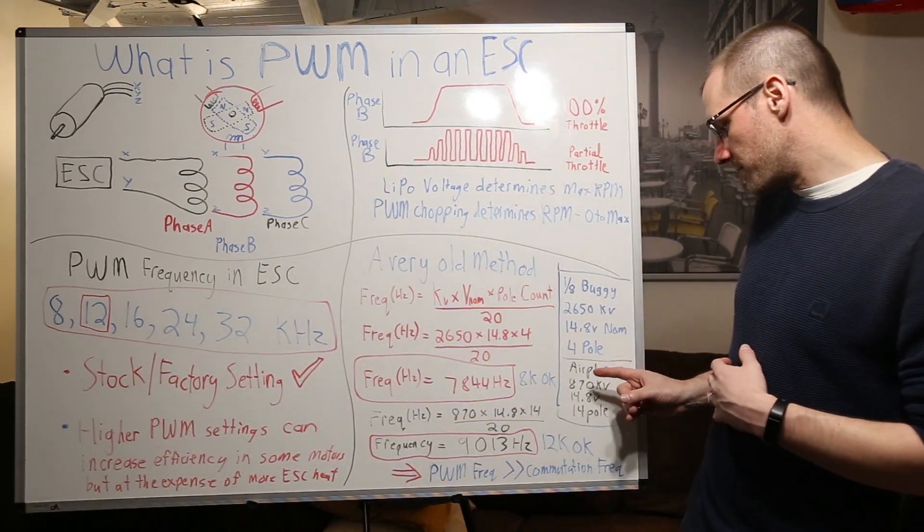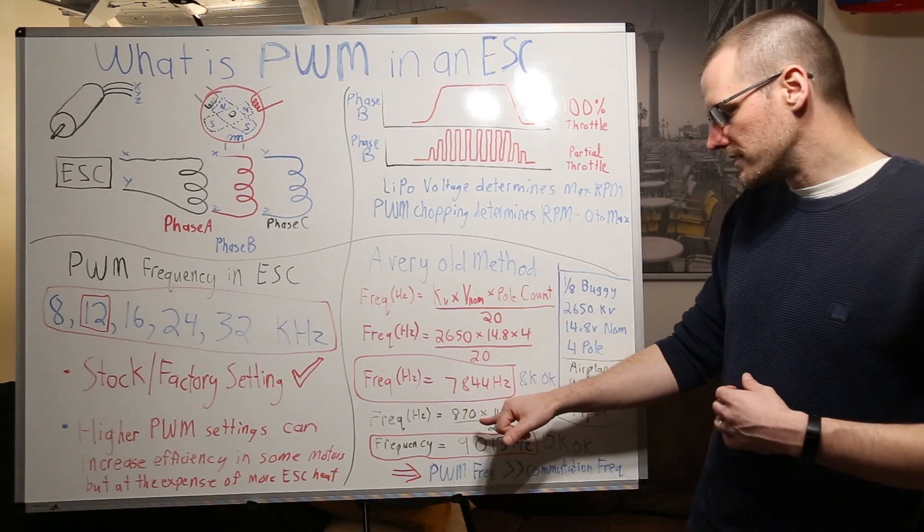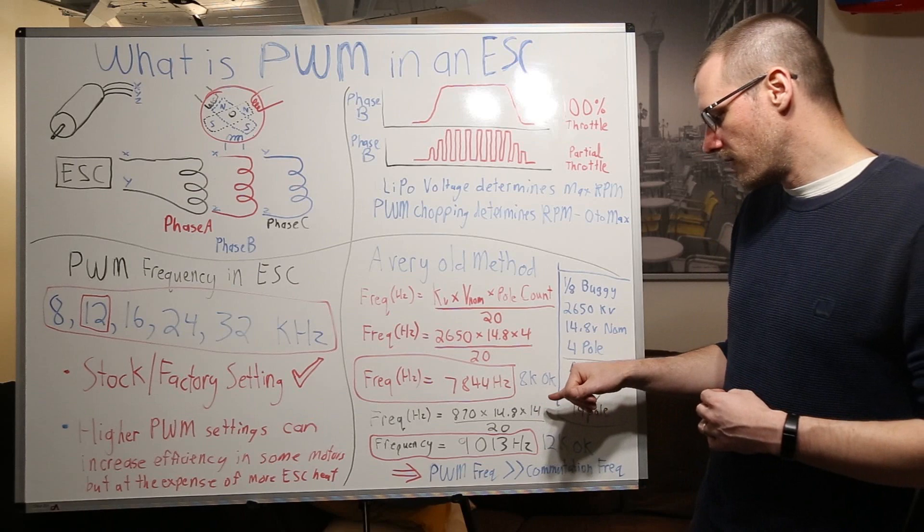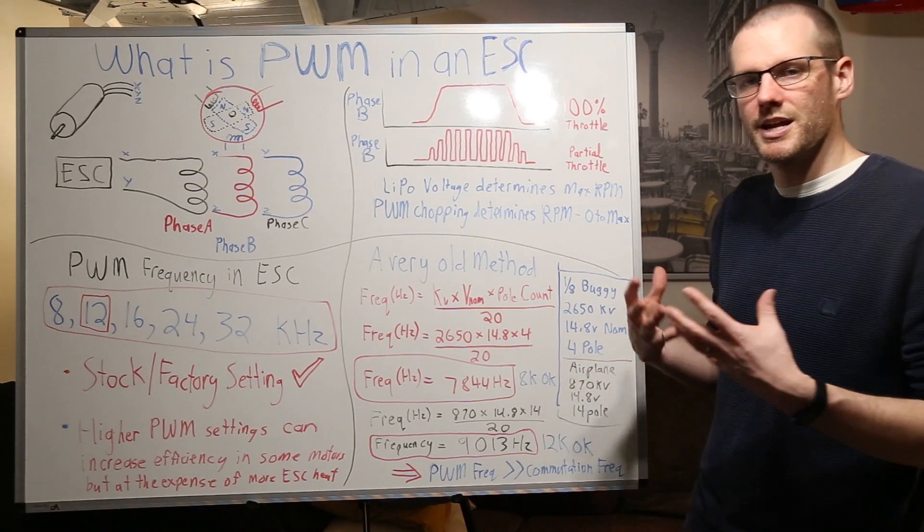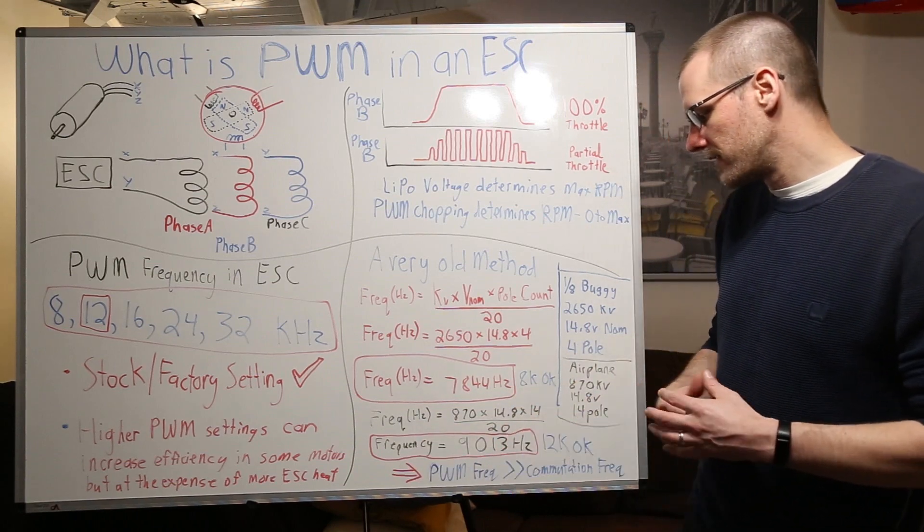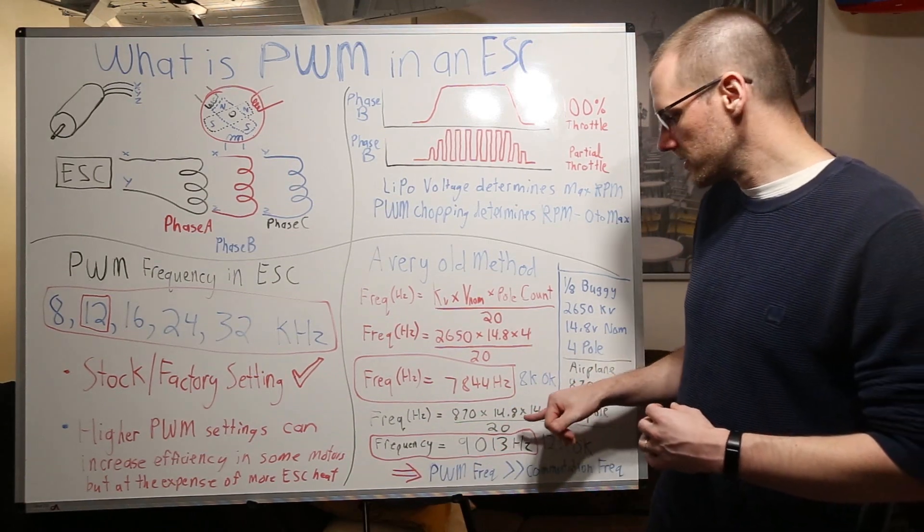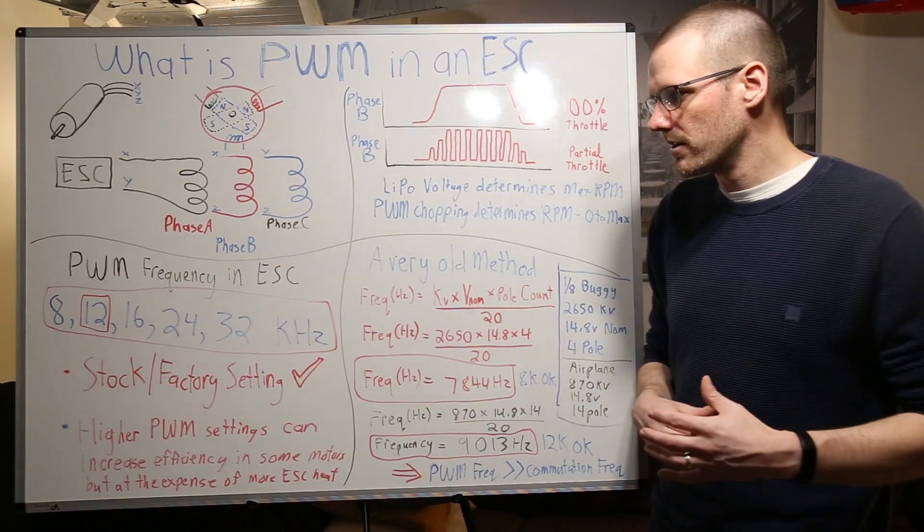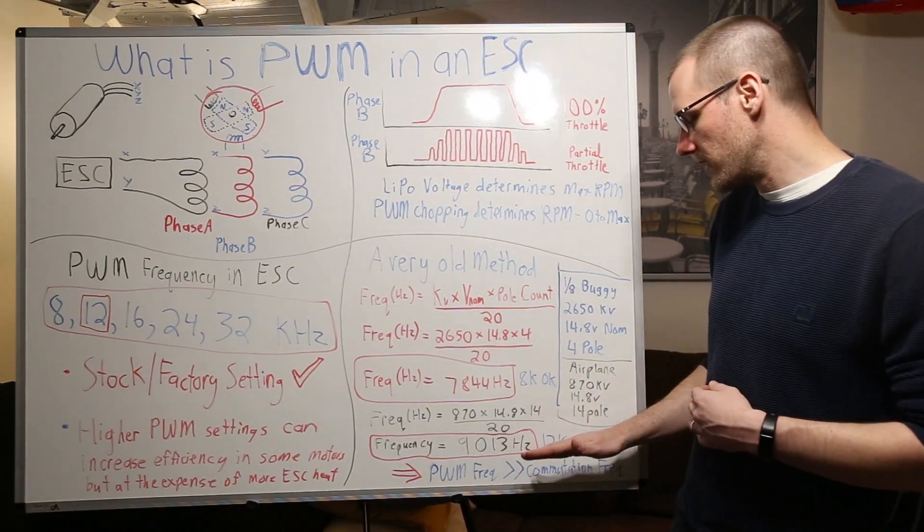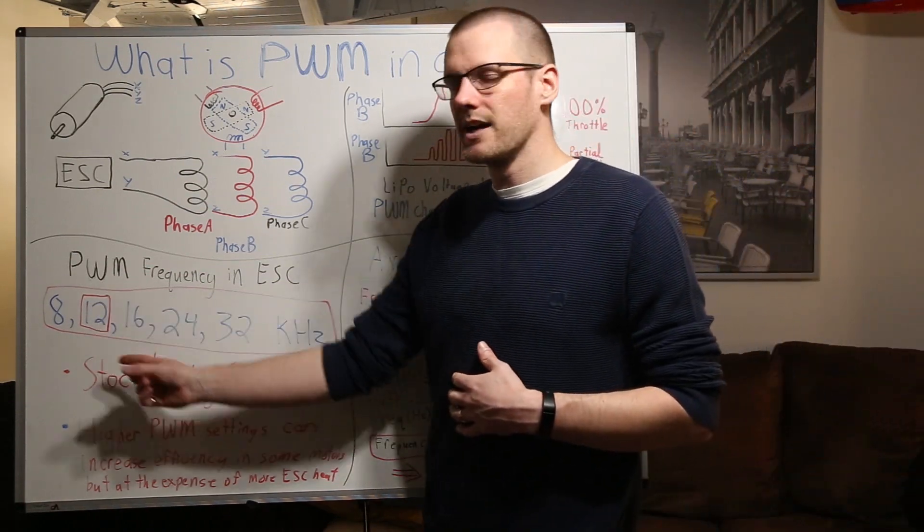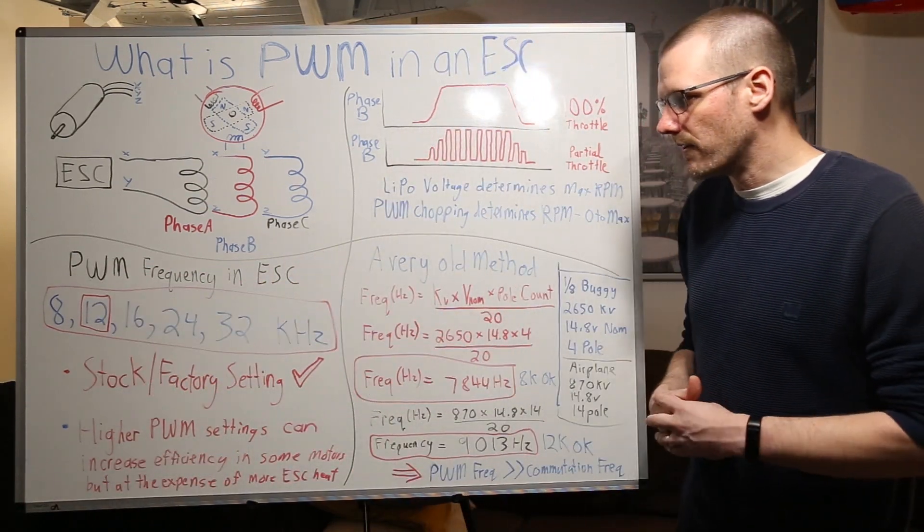Now if we go look at the other example here with the airplane this is now 870 multiplied by the same 14.8 volt battery and then we multiply by the pole count and this is an outrunner so it's got 14 poles on it and we get a frequency of 9013 hertz. So in this example 9013 is greater than 8. 8 is no longer a good option for us. We have to move to the next value. 12k is okay.